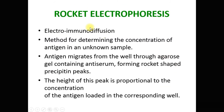Rocket electrophoresis is a type of electro-immunodiffusion, meaning the diffusion of immunological molecules under the influence of an electric field. It is a method used for determining the concentration of antigen in an unknown sample. The antigen migrates from the well through the agarose gel, which contains the antiserum, forming rocket-shaped precipitant peaks.